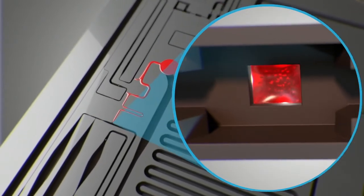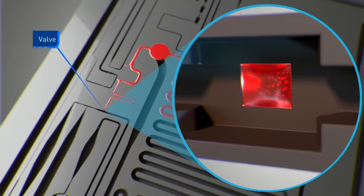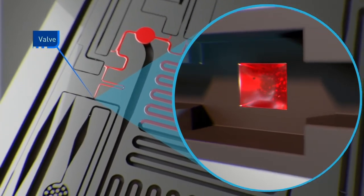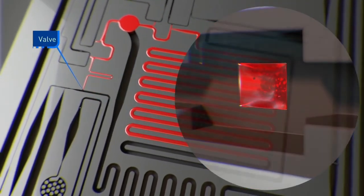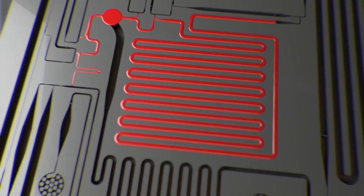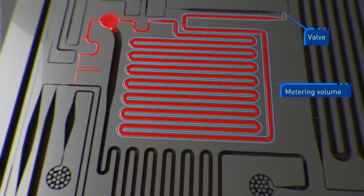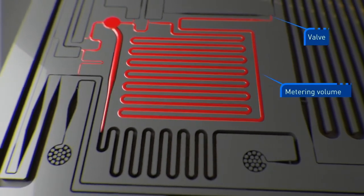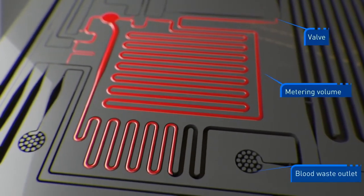The innovative design of the chip includes valves that purely function on capillary forces. These unique valves enable the sample to be temporarily held in a channel and measured to a specific volume with nanoliter precision, while any excess is siphoned off into a waste channel.